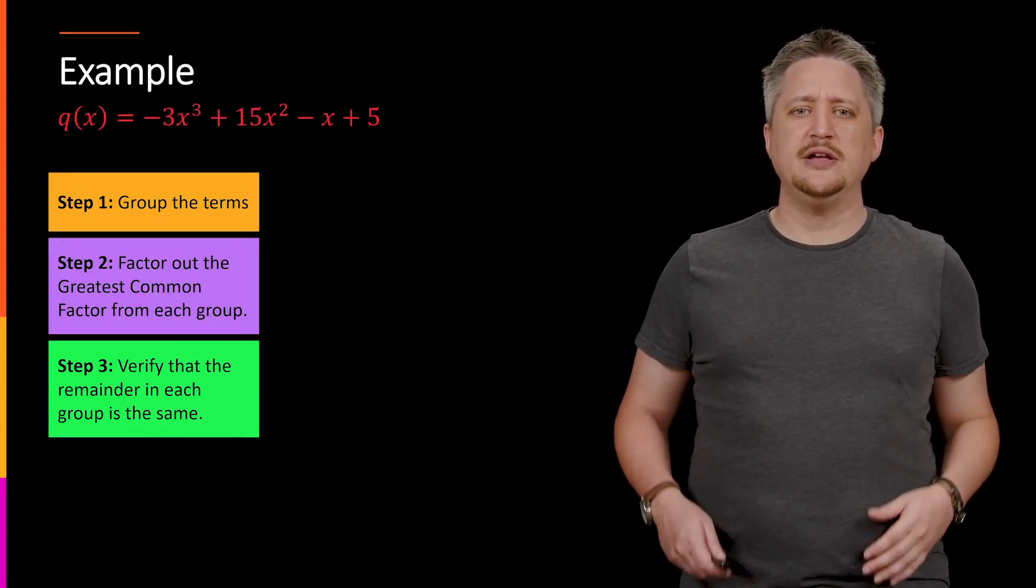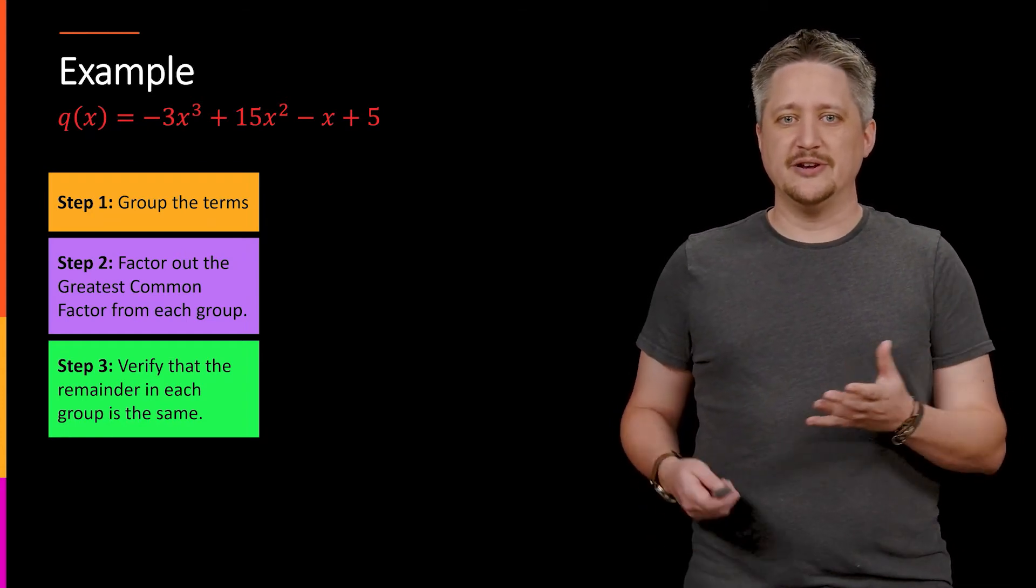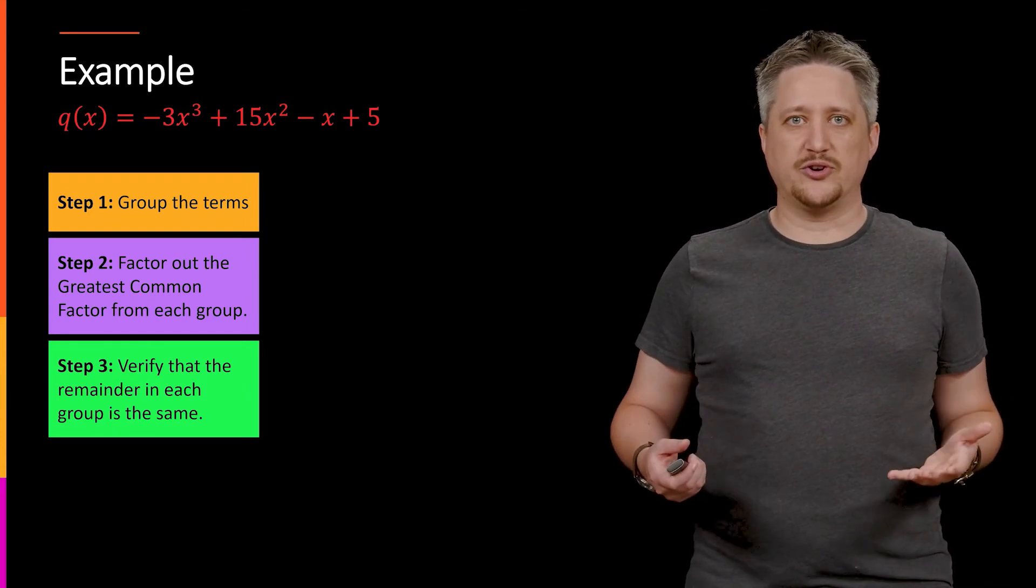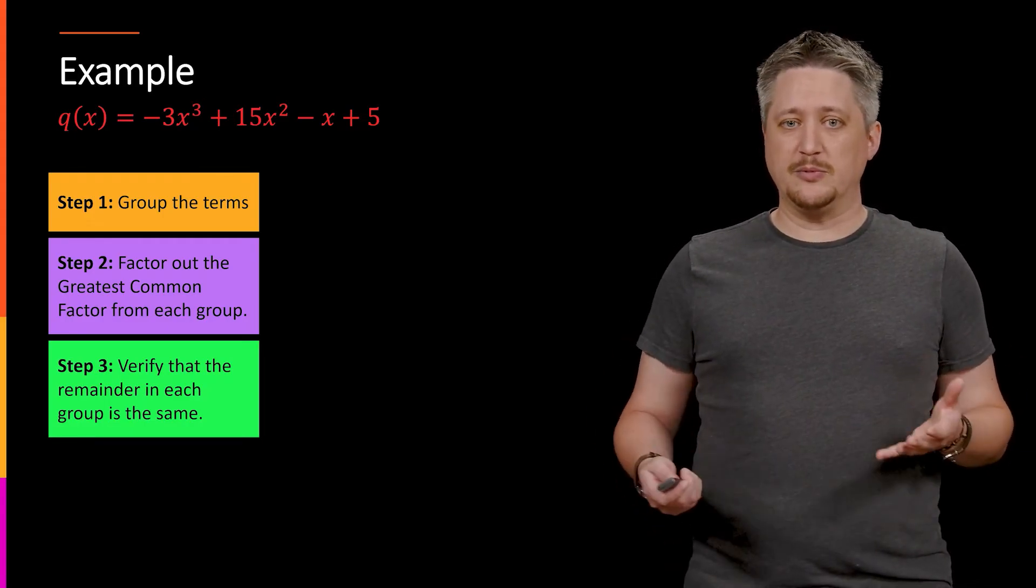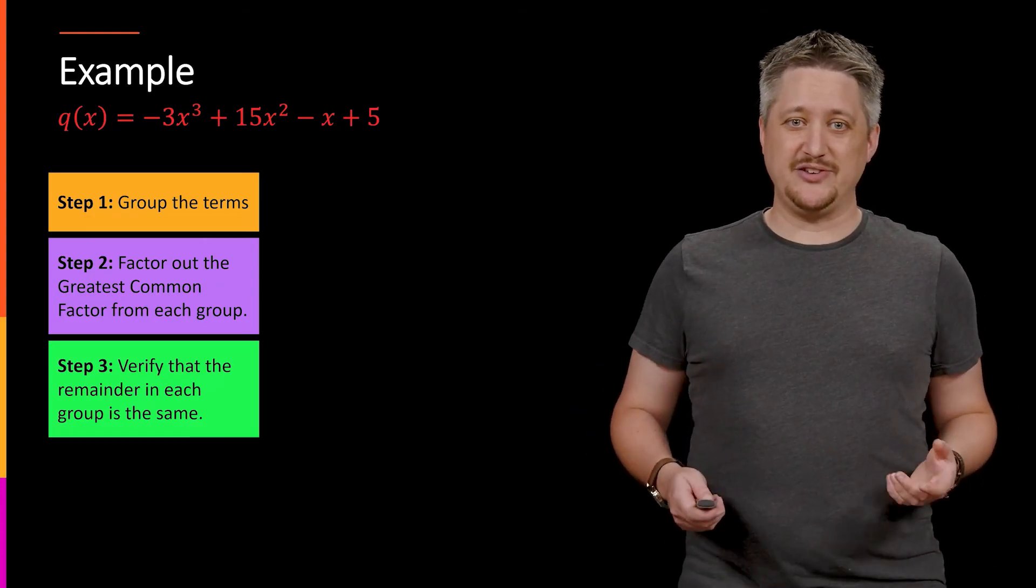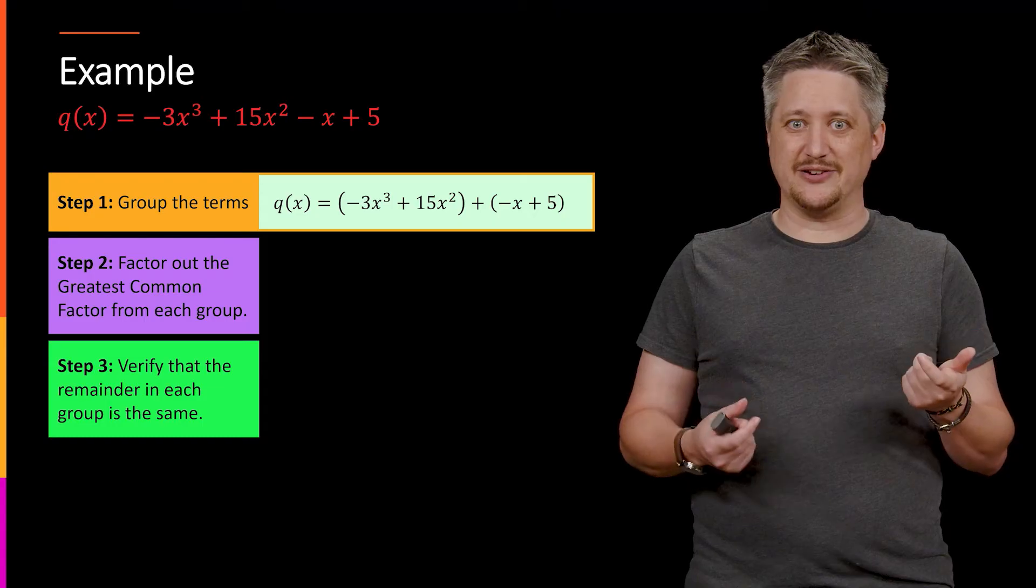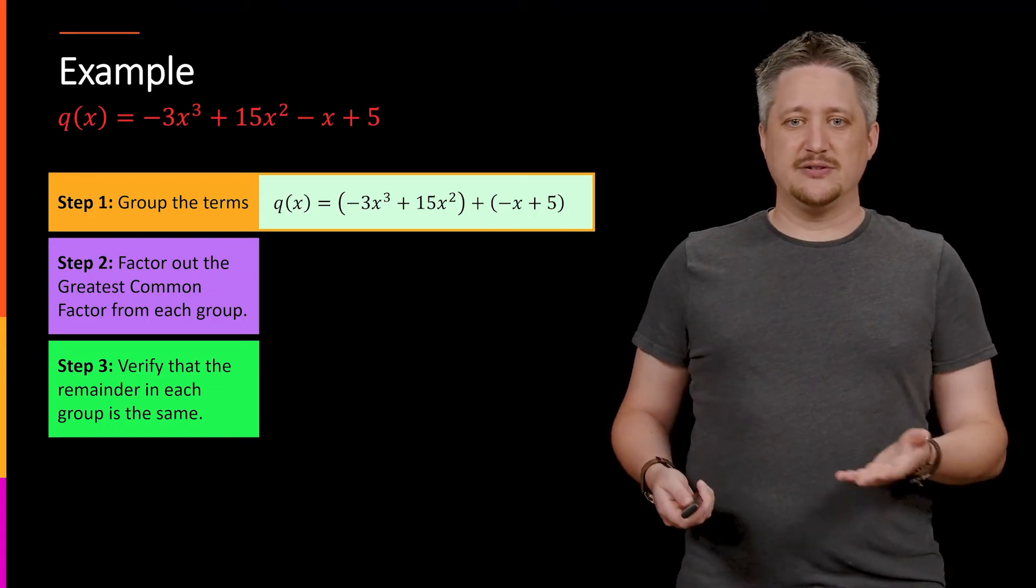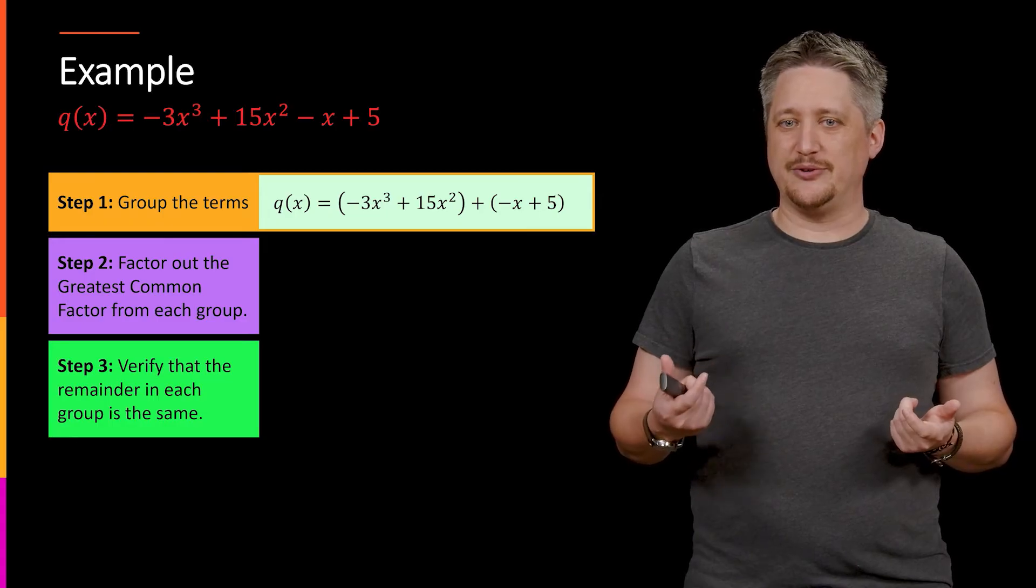All right, so let's look at another example. Let's say we have something like our q(x) here. This is another nice cubic with four terms. So step one, we want to group them. Again, we can group them in a number of different ways. Most of the time, it's easiest to group them in the obvious way. The first two together and the last two together. So here, that's exactly what I'm going to do. Group the first two terms together and the third and fourth term together.